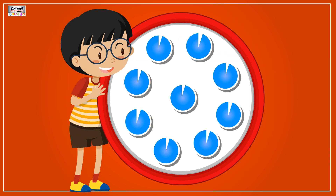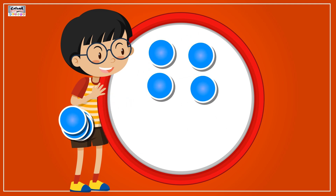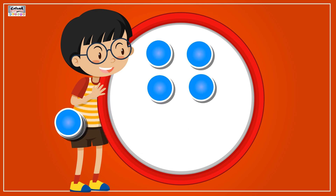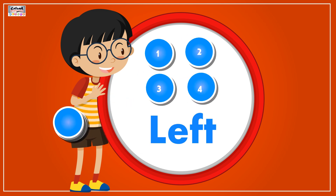Out of 9 circles, if 5 are taken away, then only 4 are left.